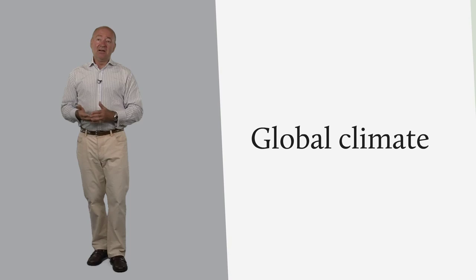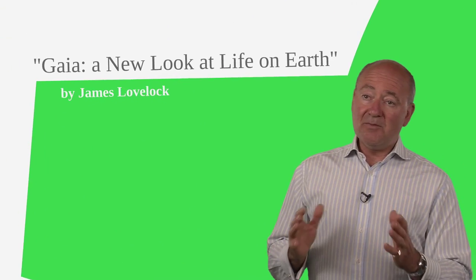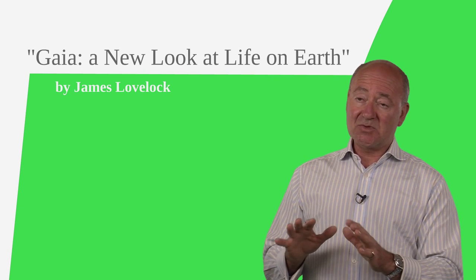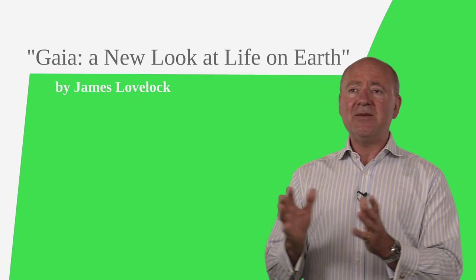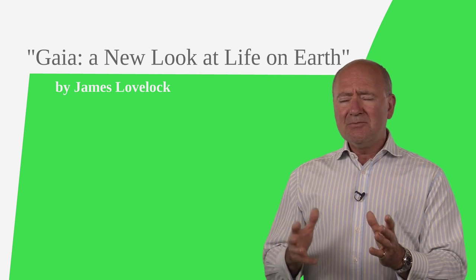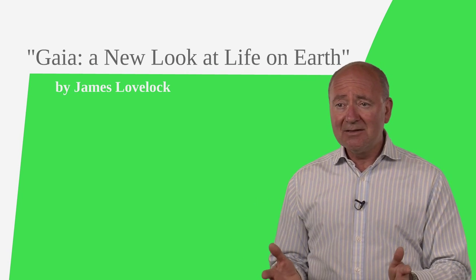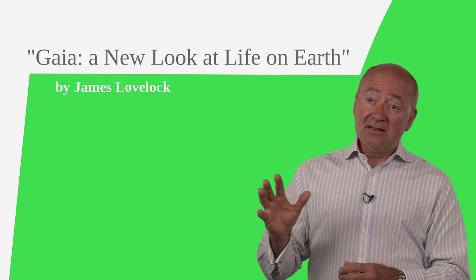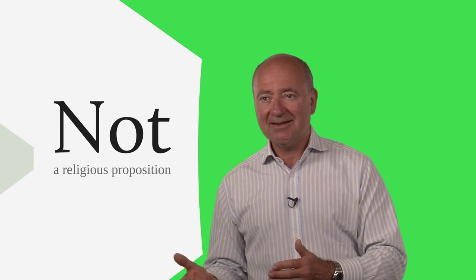Many years ago, in my knowledge of these things, the most ingenious and inventive mind to think about these problems wrote a book which has become very famous in ways that I think he didn't really intend. And this is a man called James Lovelock, and the book is called Gaia, A New Look at Life on Earth. And the heart of it is not a religious proposition, which is how many people have taken it up.